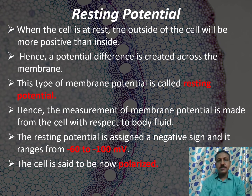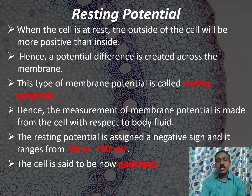Now we shall see about the resting potential. When the cell is at rest, the outside of the cell membrane will be more positive than inside. Hence, a potential difference is created across the cell membrane, and this type of potential is called resting potential. This resting potential is measured across the membrane from the cell with respect to the body fluid. The resting potential is assigned a negative value and it ranges from minus 60 to minus 100 millivolts. At this stage, the cell is said to be in polarized form.